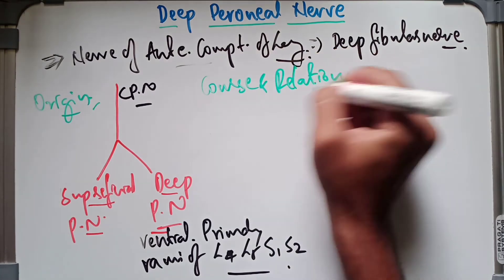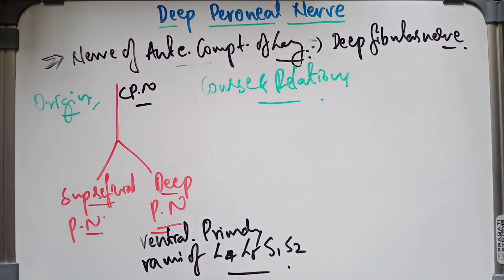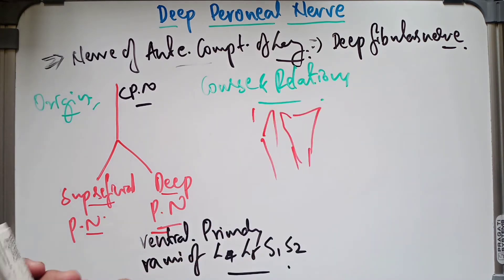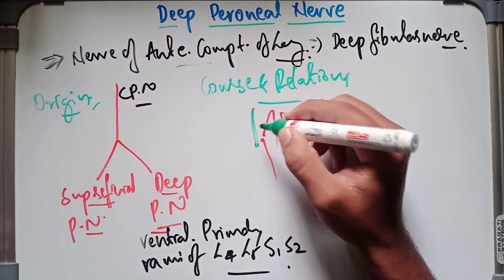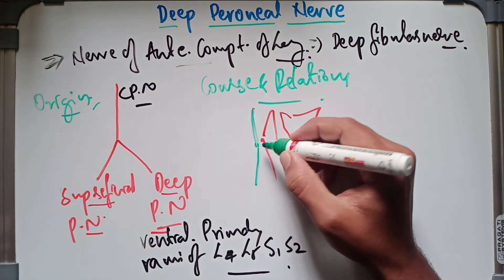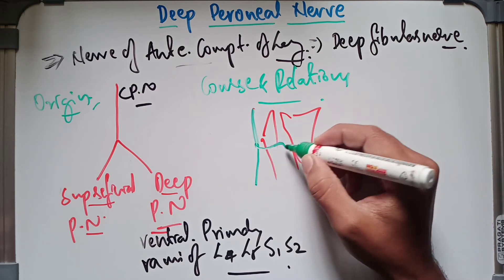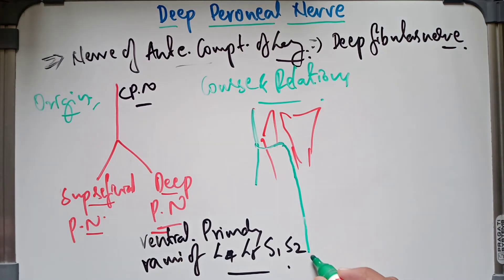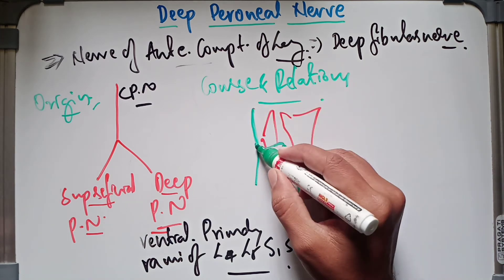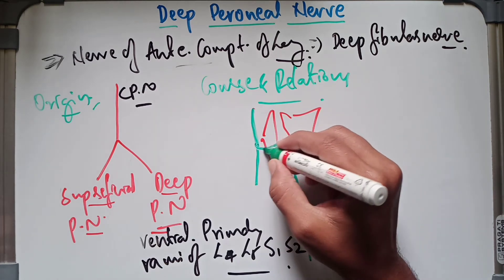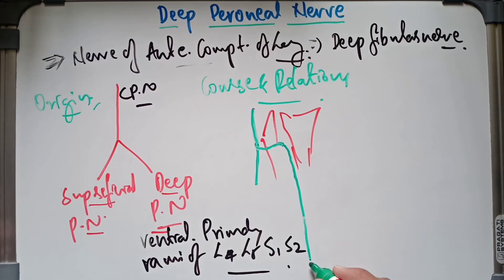Regarding the course and relations of the deep peroneal nerve: the course begins at the lateral side of the neck of the fibula. From there it gives off the superficial peroneal nerve, then crosses in front of the neck of the fibula and continues downwards, running parallel to the anterior tibial artery all the way down to the dorsum of the ankle, where it divides.